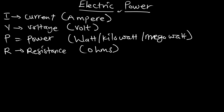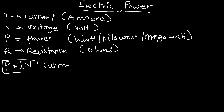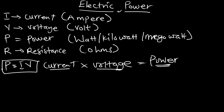So now, electric power, which is P, is given by the expression I multiplied by V. It's a very simple formula — electric power is current multiplied by voltage, and we get the electric power in watts, kilowatts, or megawatts for large amounts of power.